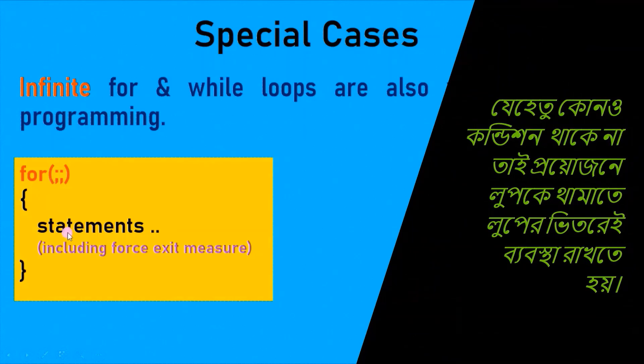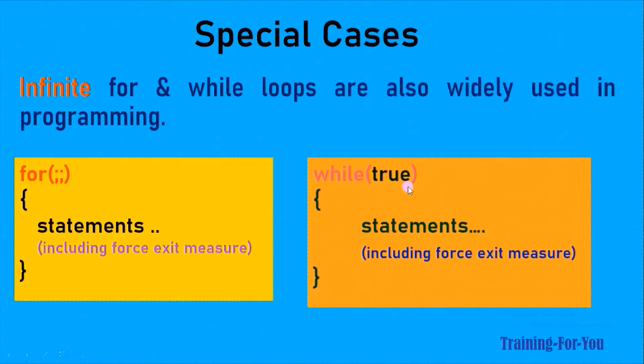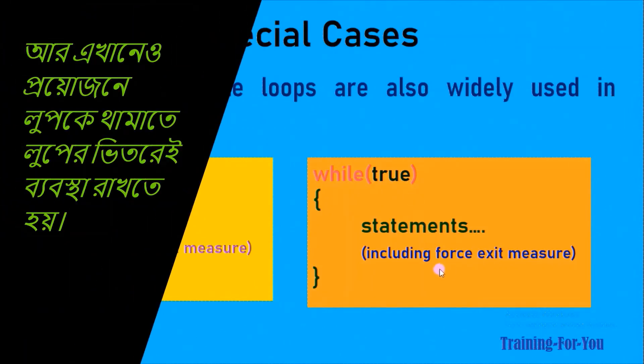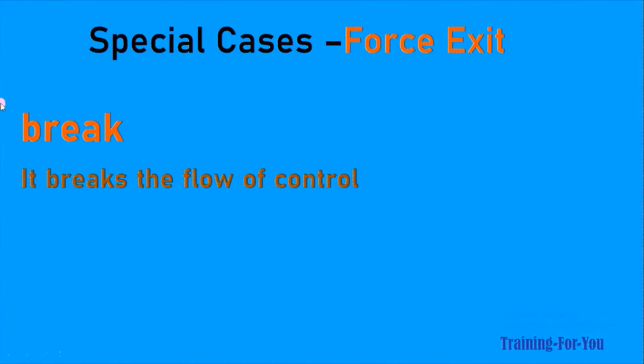As there is no condition, in order to make the loop stop we need to have a measure inside the loop. The infinite while loop looks like this: when you put a true instead of the condition, it becomes infinite. Here again we need to keep a force exit measure to stop the loop from executing.